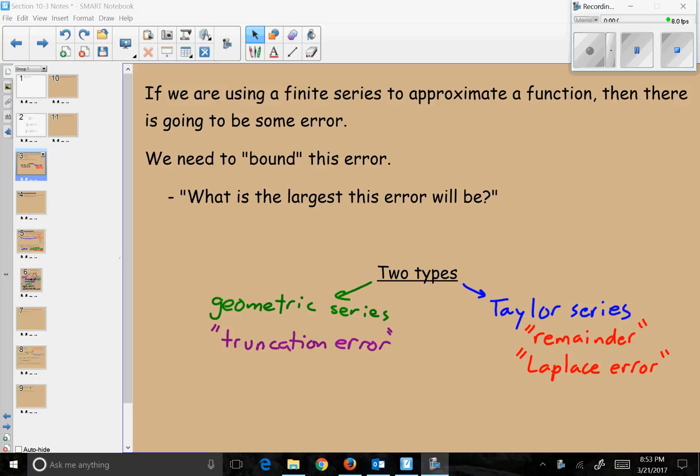The next thing we want to talk about is errors. We know that if we have a finite series, such as a Taylor polynomial, it's not going to be perfect with our function. It's going to be very close and follow it very closely, but the further away we get, the more error we get.